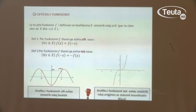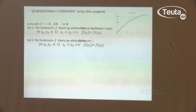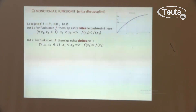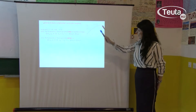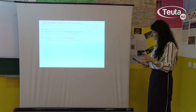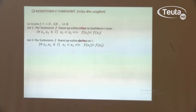Do të analizojmë grafikisht se cili është funksion rritës. Kemi këtu dy vlerat x₁ dhe x₂, dhe bëjmë pasqyrimet e tyre dhe shohim ku i kanë pasqyrat: kemi f(x₁) dhe f(x₂). Çka shohim këtu? Kemi x₁ < x₂, por gjithashtu edhe pasqyrat e argumenteve tyre ruajnë renditjen: f(x₁) < f(x₂). Ky funksion është funksion rritës.